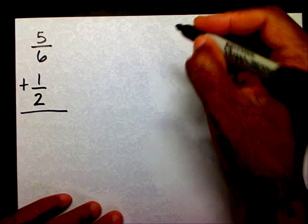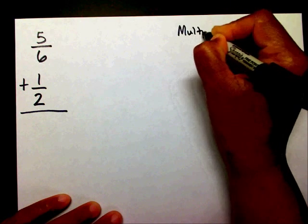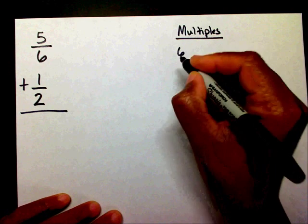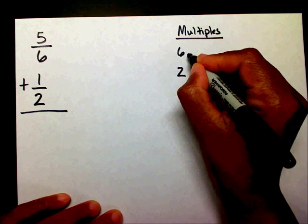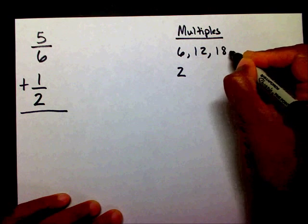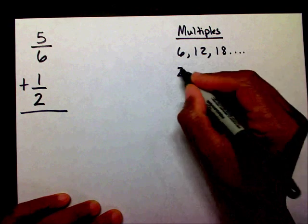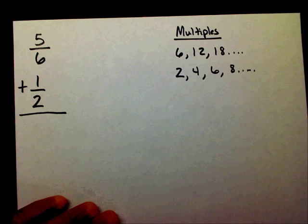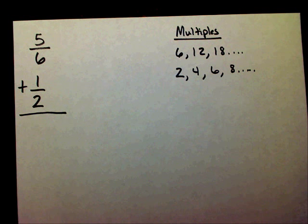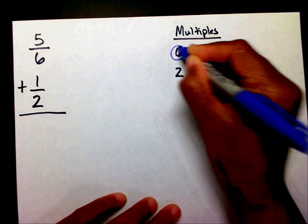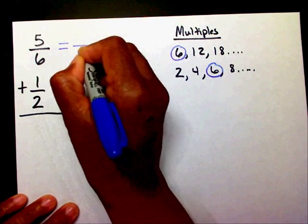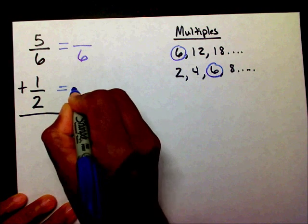I'm going to get that new denominator by listing my multiples. I want to list the multiples of 6 and the multiples of 2. The multiples of 6 are 6, 12, 18, and I can go on and on. The multiples of 2 are 2, 4, 6, 8, and I can go on and on. I need to find the multiples that they share. Well, 6 and 2 share the multiple of 6. So this is going to be my new denominator. I'm going to draw a line and put a 6 here.